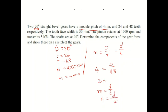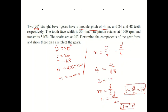Similarly, for the pinion: m = small d / small t, so 4 = d / 24, giving small d = 4 × 24 = 96 mm. Therefore small r = d / 2 = 48 mm. For the gear: capital R = D / 2 = 192 / 2 = 96 mm. So we have small radius r = 48 mm and capital radius R = 96 mm.